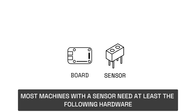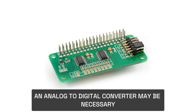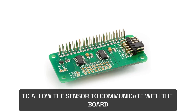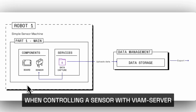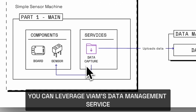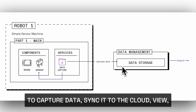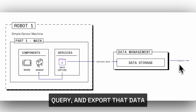Most machines with a sensor need at least the following hardware: a board, and depending on your sensor's output type, an analog to digital converter may be necessary to allow the sensor to communicate with the board. When controlling a sensor with VM Server, you can leverage VM's data management service to capture data, sync it to the cloud, view, query, and export that data.